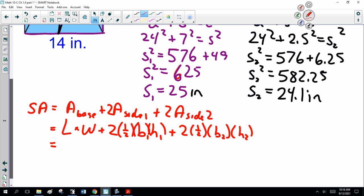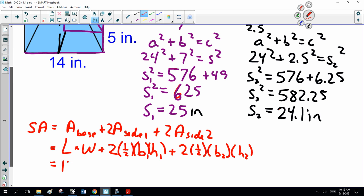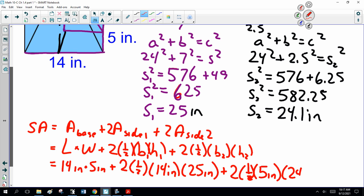So, plugging the numbers in, this is 14 times 5. Two times one half times 14 inches, and the slant height for 14 inches is 25 inches. Don't mix them up. Two times one half times 5 inches times 24.1.